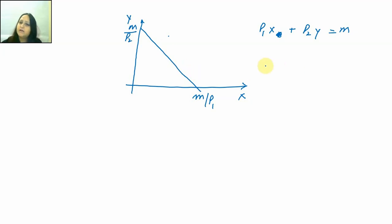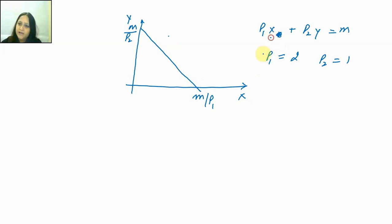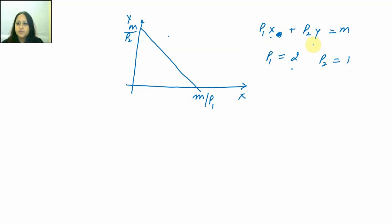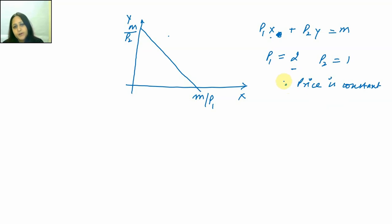For the sake of understanding, let me take a hypothetical example. Let's say p1 is 2 and p2 is 1. So every unit of good x costs me 2 rupees and every unit of good y costs me 1 rupee. Price is constant — whether I buy 100 units or 500 units of good x, each unit still costs me 2 rupees. Similarly, each unit of good y keeps costing me 1 rupee.